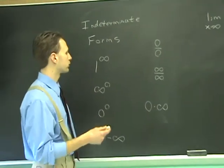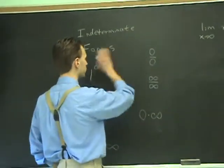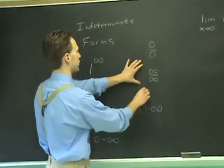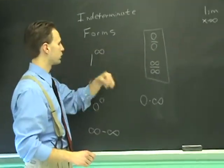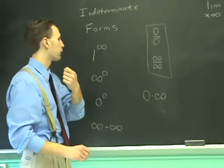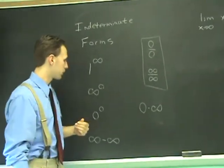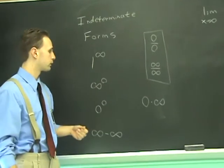L'Hôpital's rule is what allows us to evaluate limits of indeterminate form 0/0 and ∞/∞. These are the two main ones. Whenever you see these, you can just do L'Hôpital's rule straight up. But those aren't the only two indeterminate forms. We also have these five things here.